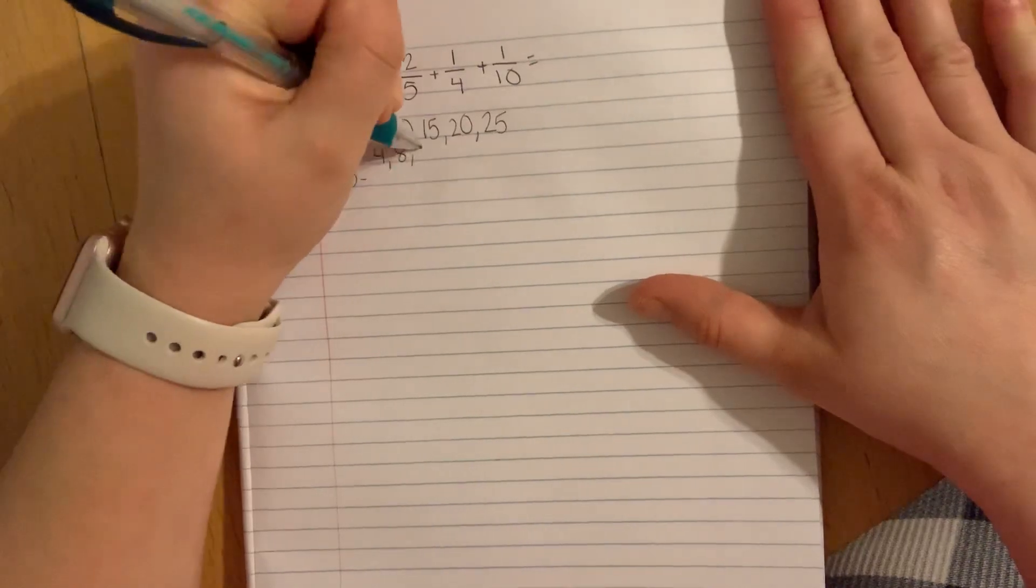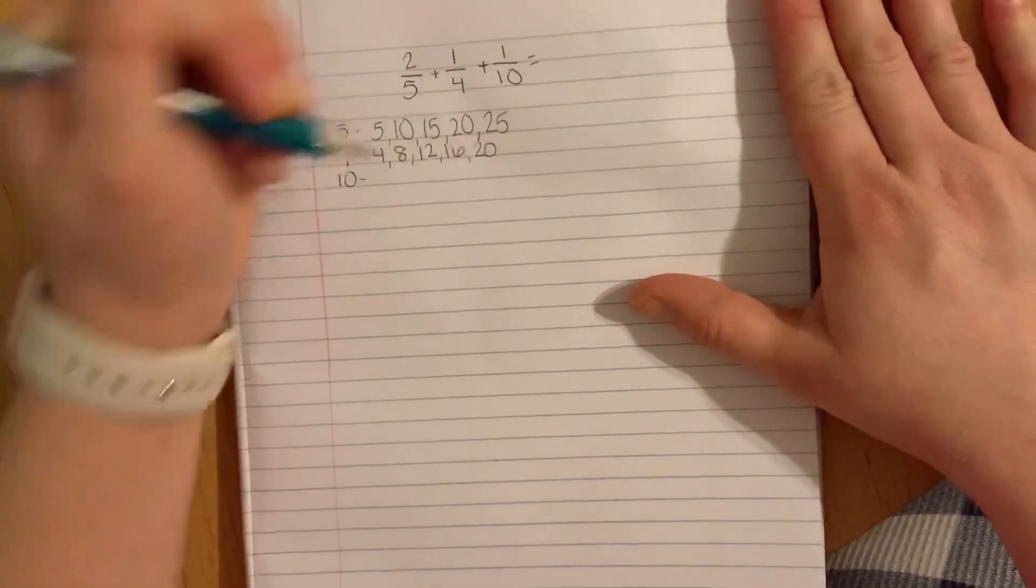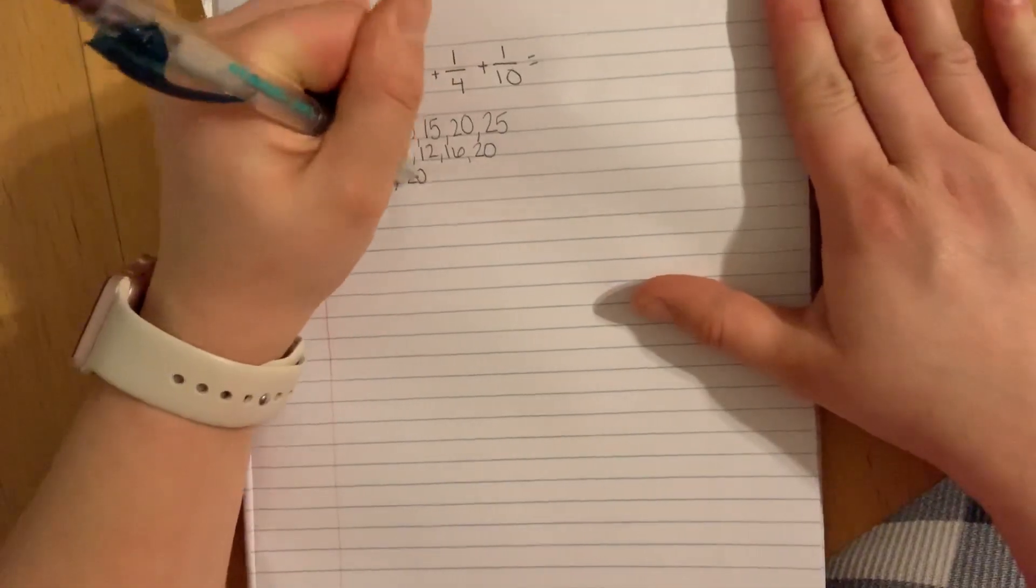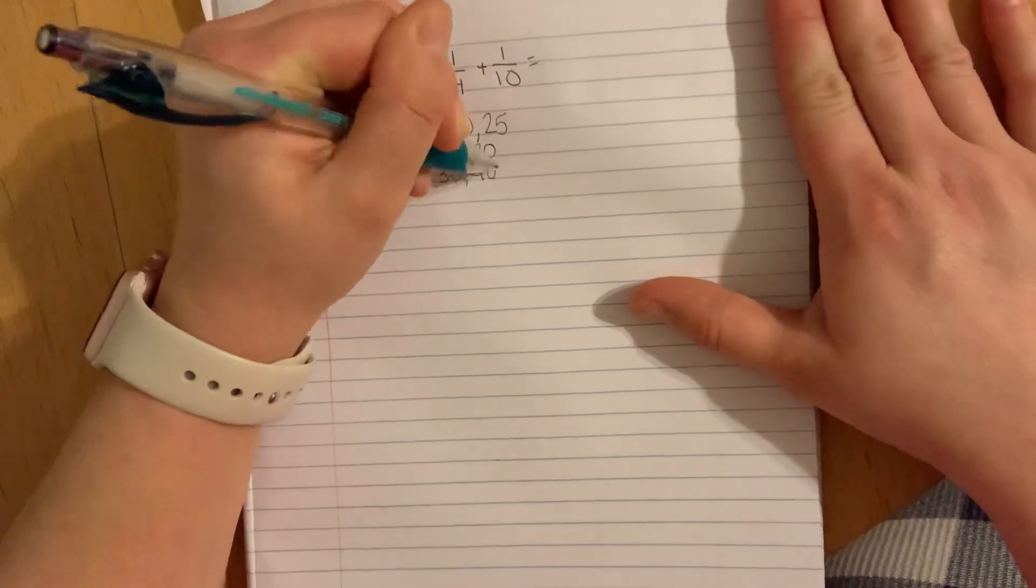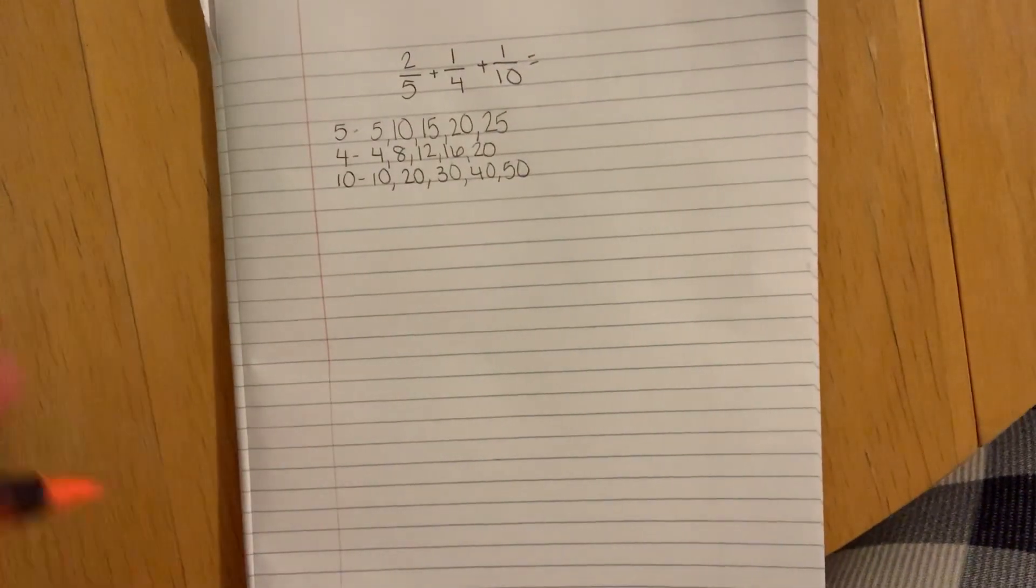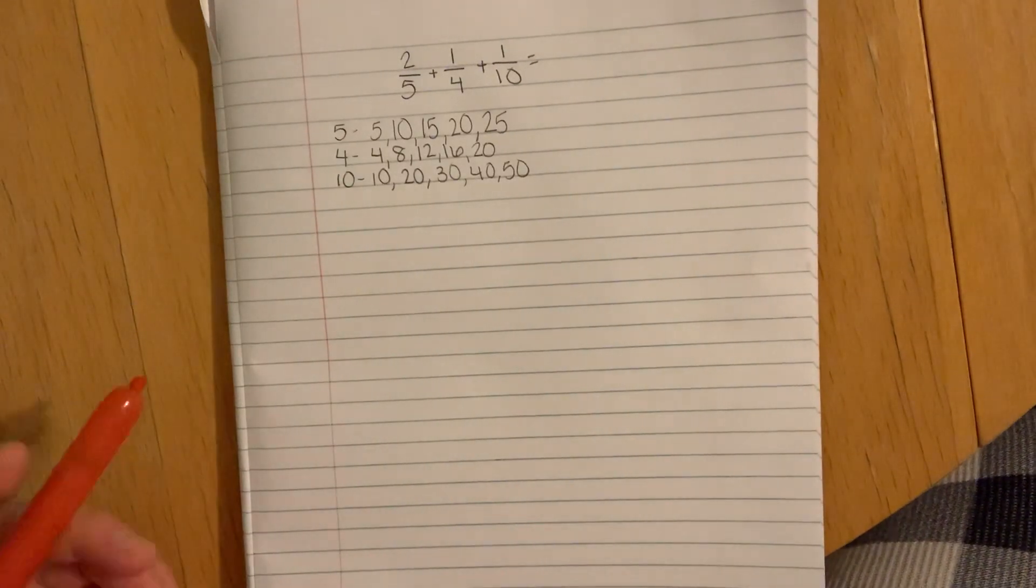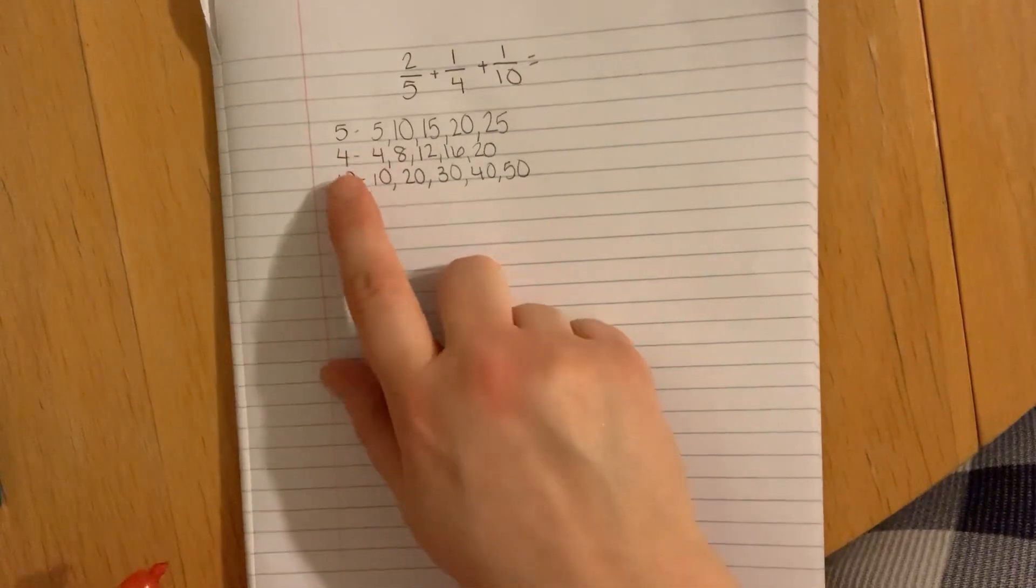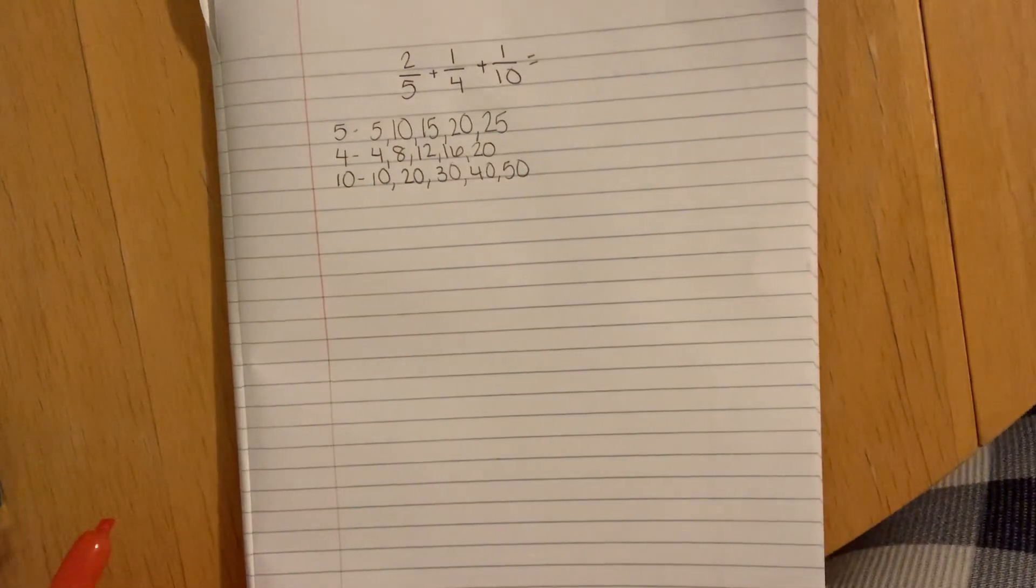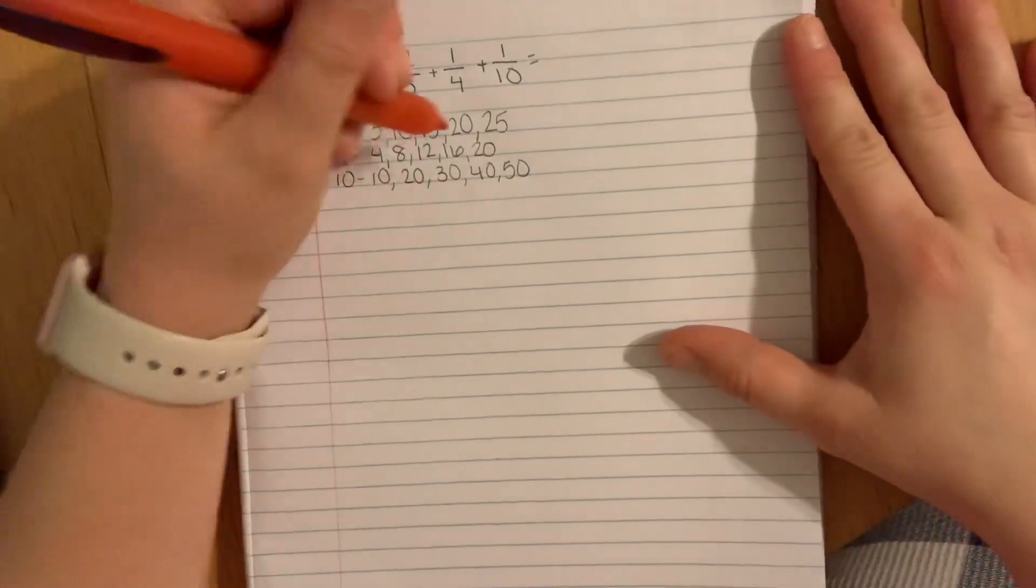4, 8, 12, 16, 20. And then 10s are easy: 10, 20, 30, 40, 50. Now I need to look at all those numbers and say which number do I have in 5, 4, and 10 that are the same.